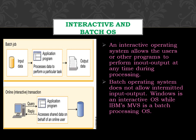Interactive and batch operating system: an interactive operating system allows the user or other programs to perform input-output at any time during processing. A batch operating system does not allow intermediate input and output. Windows is an interactive OS while IBM MVS is a batch processing OS. In a batch operating system, there is no intermediate input-output in between, whereas in an interactive operating system, you interact with input and output.